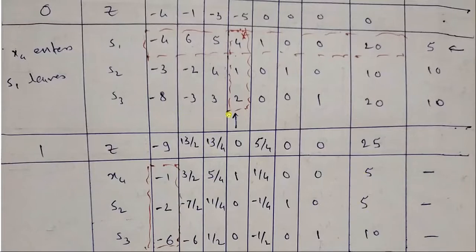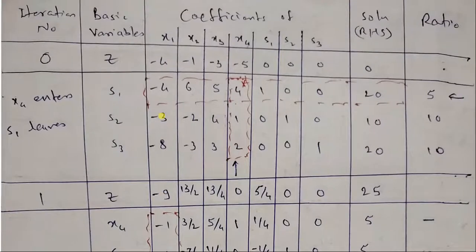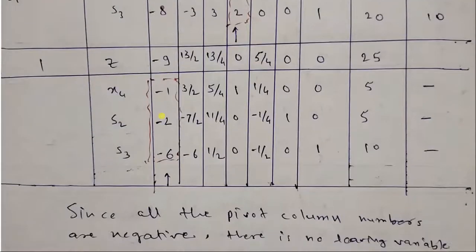And for s3, we will multiply x4 by 2 and subtract. Operation for s3 is s3 minus 2x4. Now, most negative number is minus 9. Corresponding variable x1 enters the table. Take the ratio of solution with elements in the pivot column. 5 by minus 1, we are not writing. 5 by minus 2, not writing. All ratios are negative here.